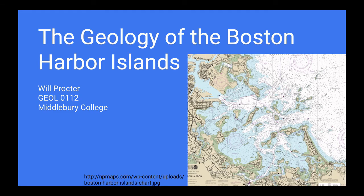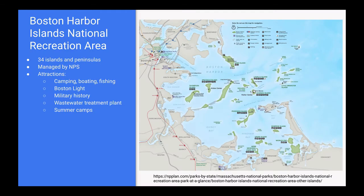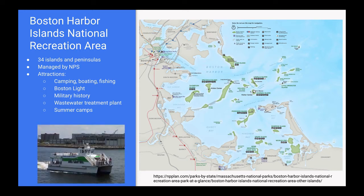Hi everyone, welcome to my video on the geology of the Boston Harbor Islands. To provide some context, there are 34 islands and peninsulas that make up what's known as the Boston Harbor Islands National Recreation Area. This isn't quite a national park, however it is managed by the National Park Service. These islands provide a great escape from the hustle and bustle of downtown Boston, and they're easily accessible by ferries.